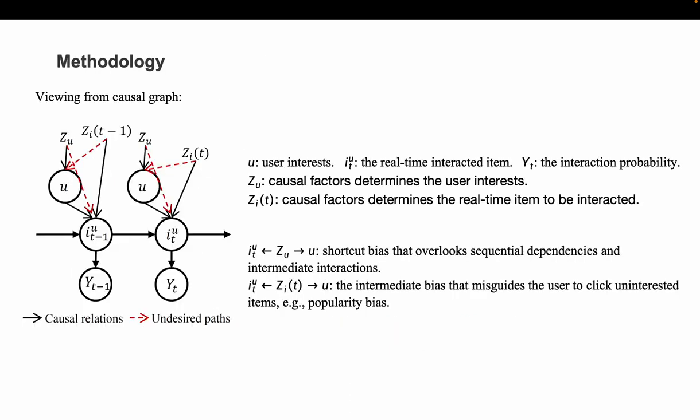Therefore, to tackle these challenges, we formulate the task of sequential recommendation from a causal perspective. We propose the integration of a causal graph. In this graph, the black arrows represent causal relations between variables, while the red dashed arrows indicate undesired paths that may generate bias affecting recommendation quality. The causal graph illustrates relations among five variables: